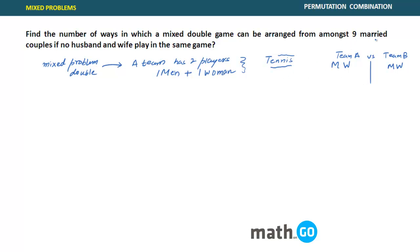And there are nine married couples, so that means there are nine men and nine women. It is given that no husband and wife play in the same game — so this man and his wife should not be in the same team. How many such games can be arranged?